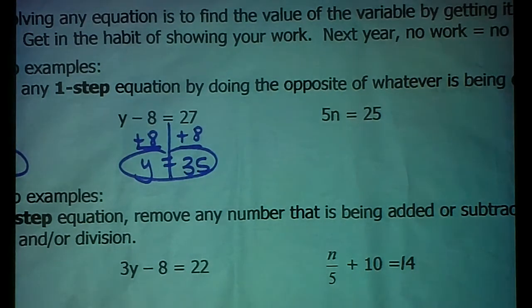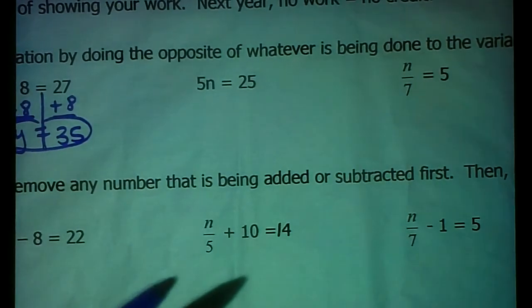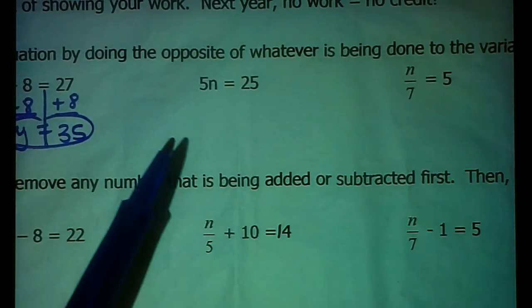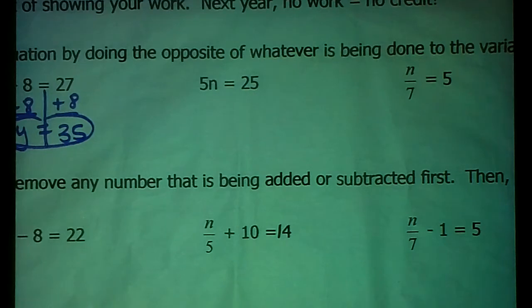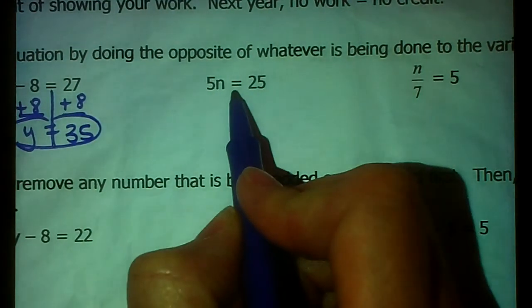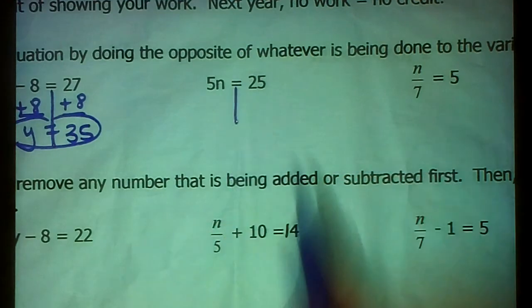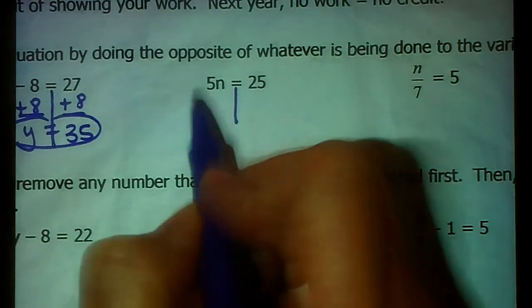For multiplication and division, you'll notice, I'm sure you have had some experience with this so far, that when you have five and a variable right next to each other, that means that multiplication is happening. So N is being multiplied by five. So you might be thinking, what's the opposite of multiplying by five? You guessed it, divide by five. I'm going to draw a line, just like Mrs. Trombley. You'll learn soon enough that we're essentially the same person.